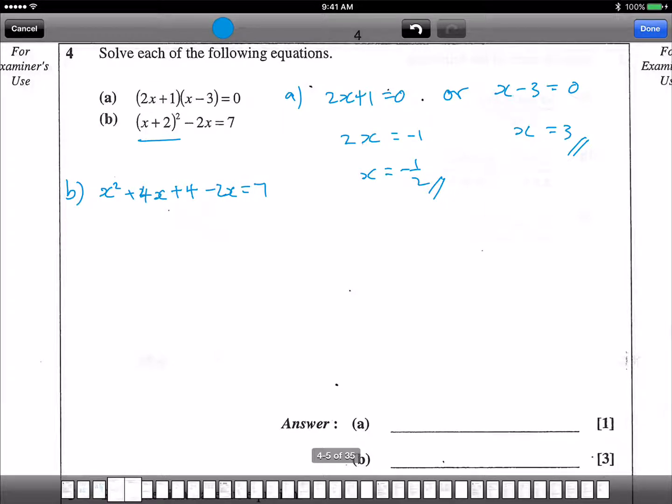7. Okay, you can see that we expand this part, so it becomes this. Then the minus 2x equals to 7, and then we bring the 7 inside.